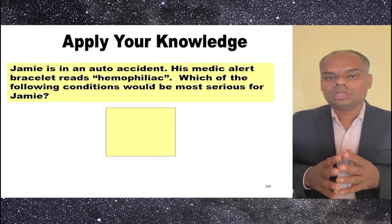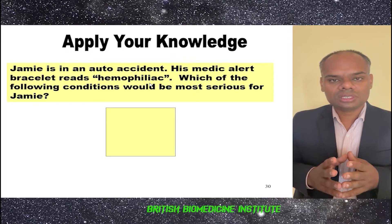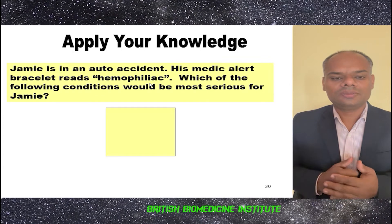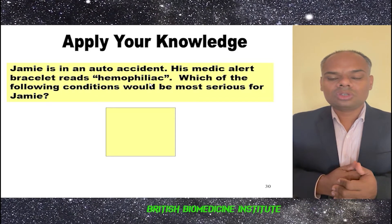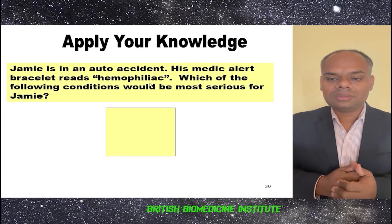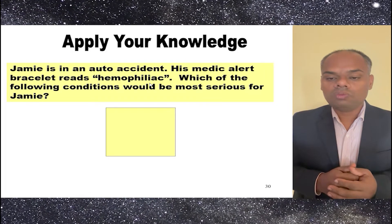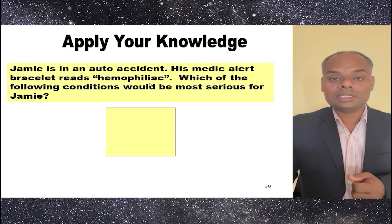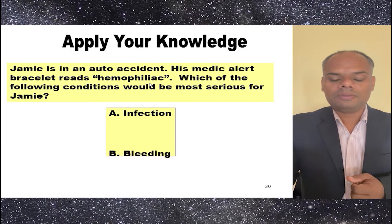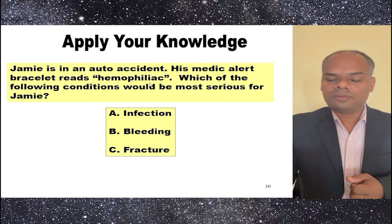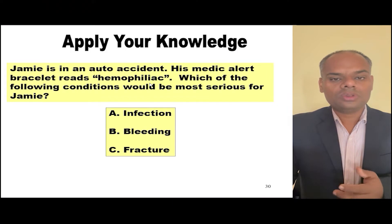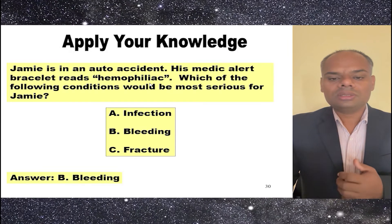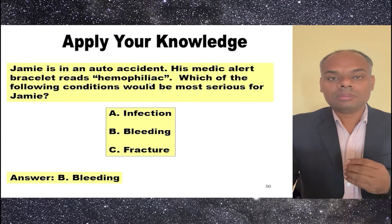Here are some basic questions to answer. Jamie is in an auto accident. His medic alert bracelet reads hemophiliac. Which of the following conditions would be the most serious for Jamie: A) infection, B) bleeding, or C) fracture? The answer is B, bleeding, because the patient is hemophiliac.